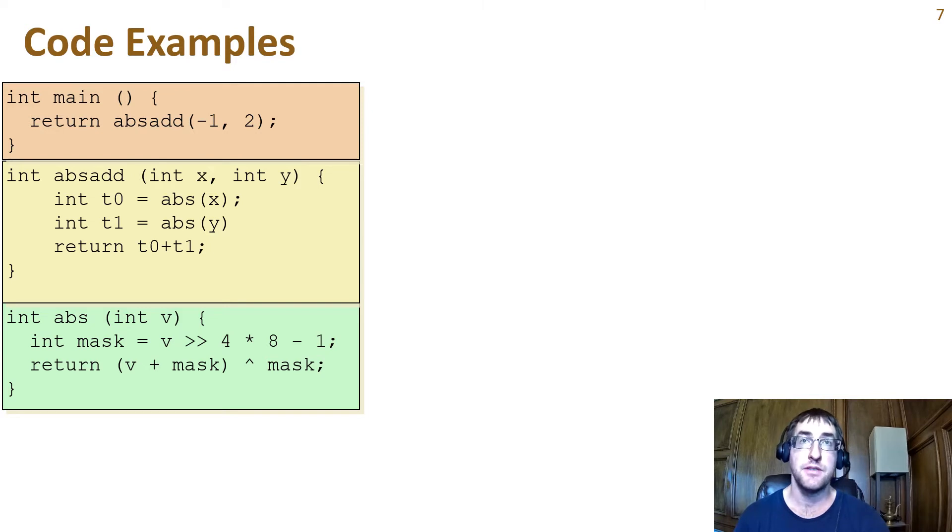It calls the abs function, which takes one int argument and returns an int. In the following, we'll look at the assembly and walk through execution of the program.